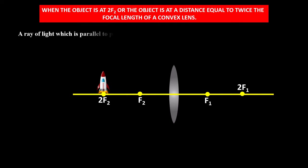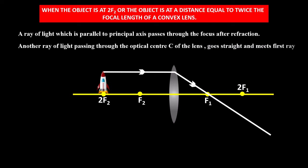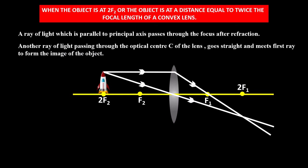A ray of light parallel to the principal axis passes through the focus after refraction. Another ray passing through the optical center C of the lens goes straight and meets the first ray to form the image. One more ray traveling along the principal axis goes without any deviation. In this way, the image is formed at 2f1.